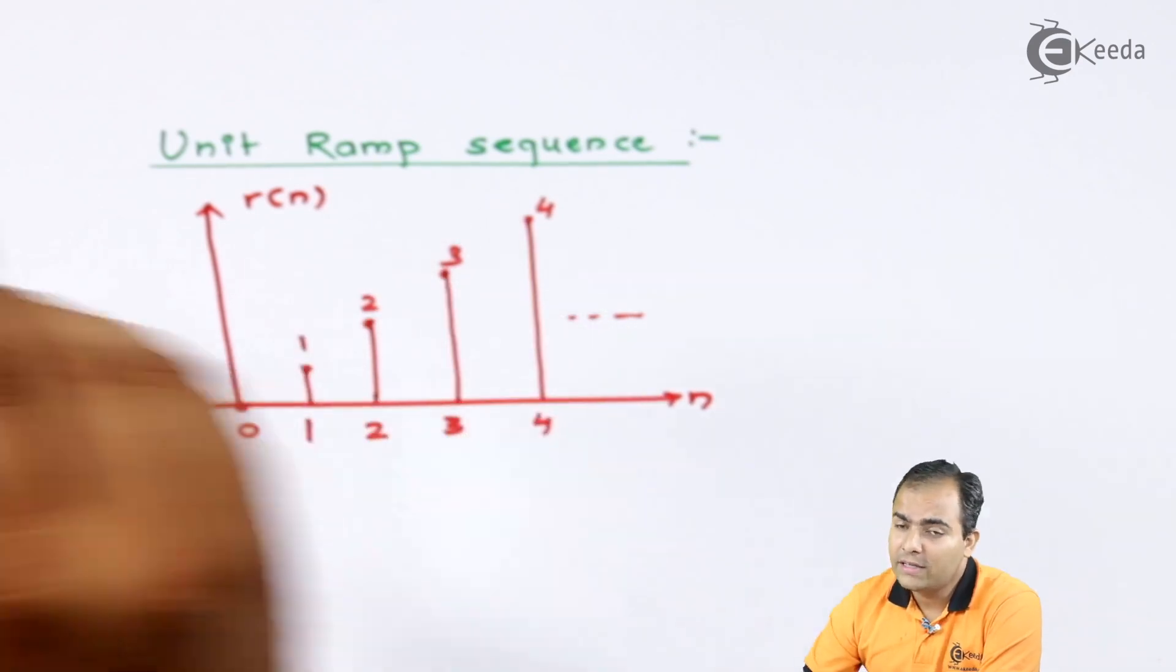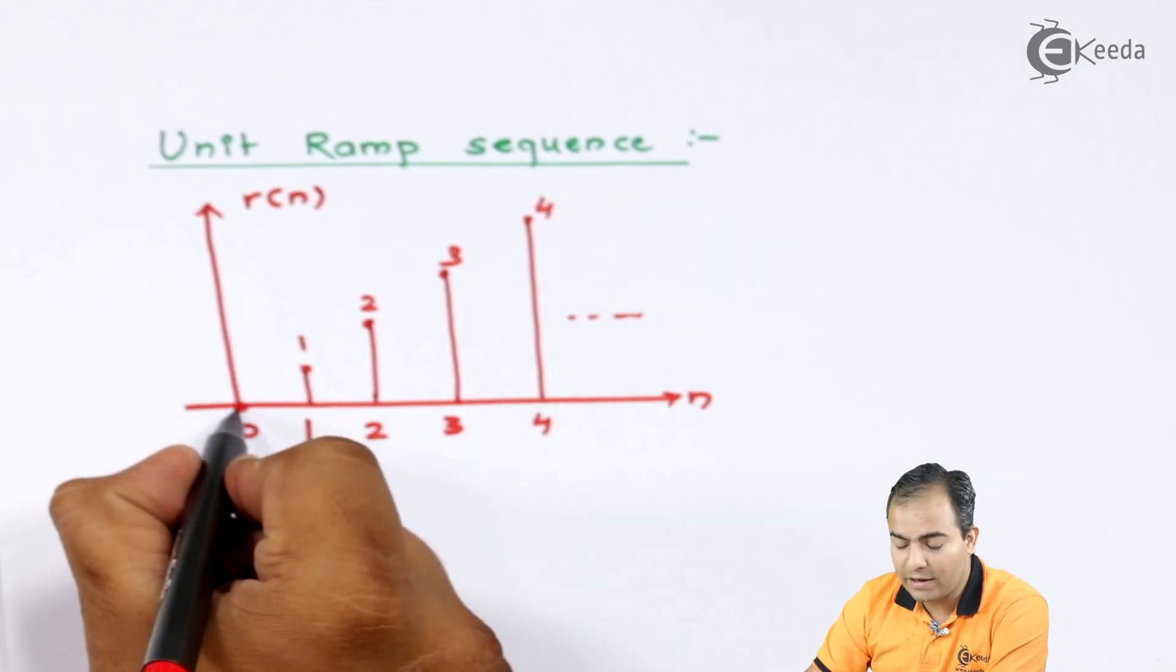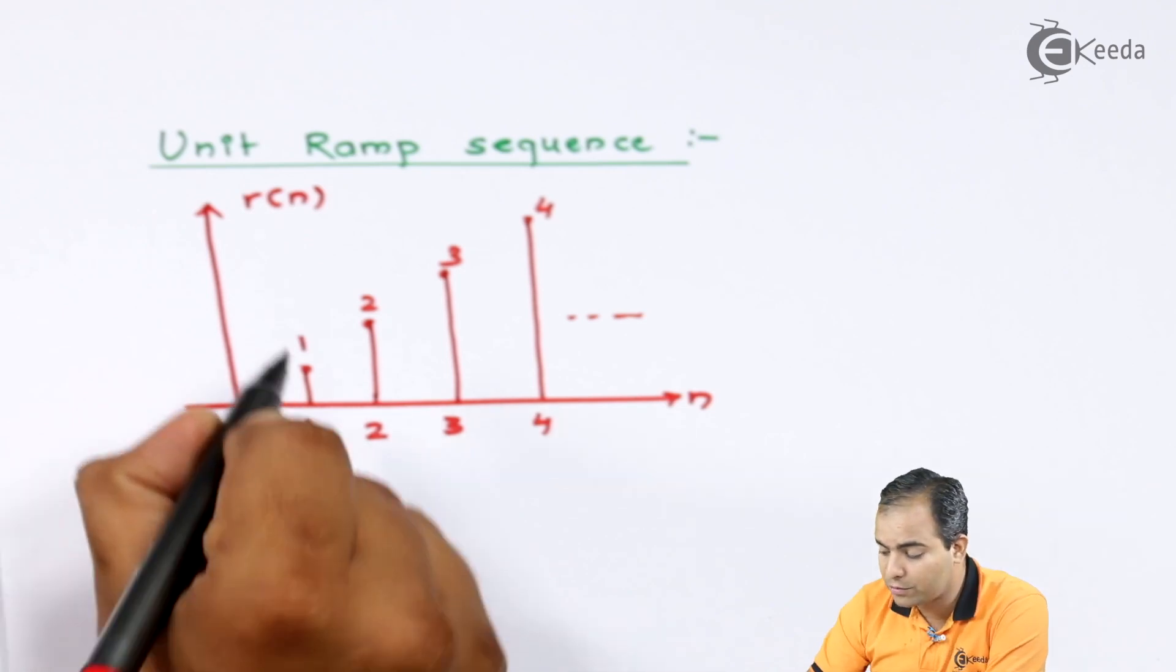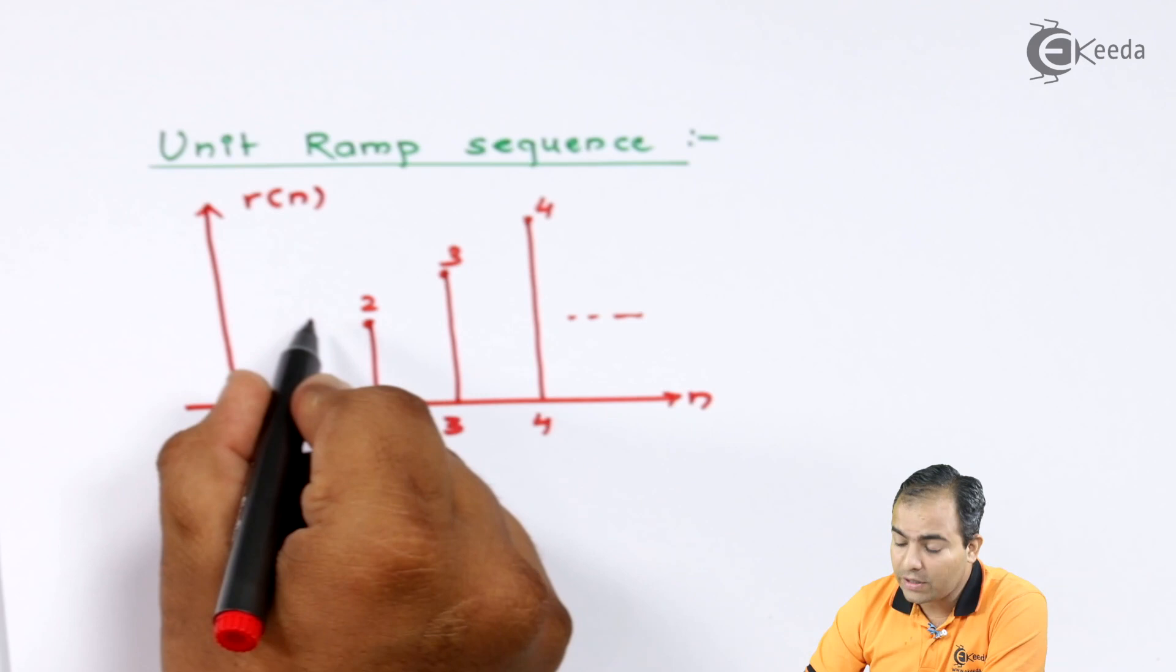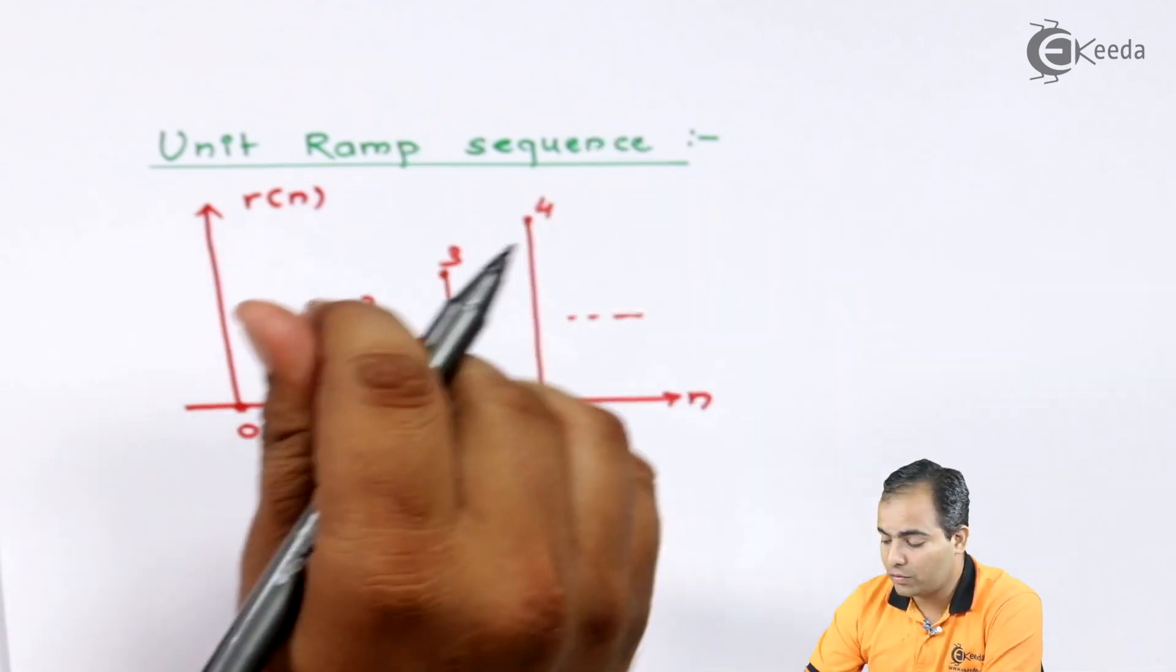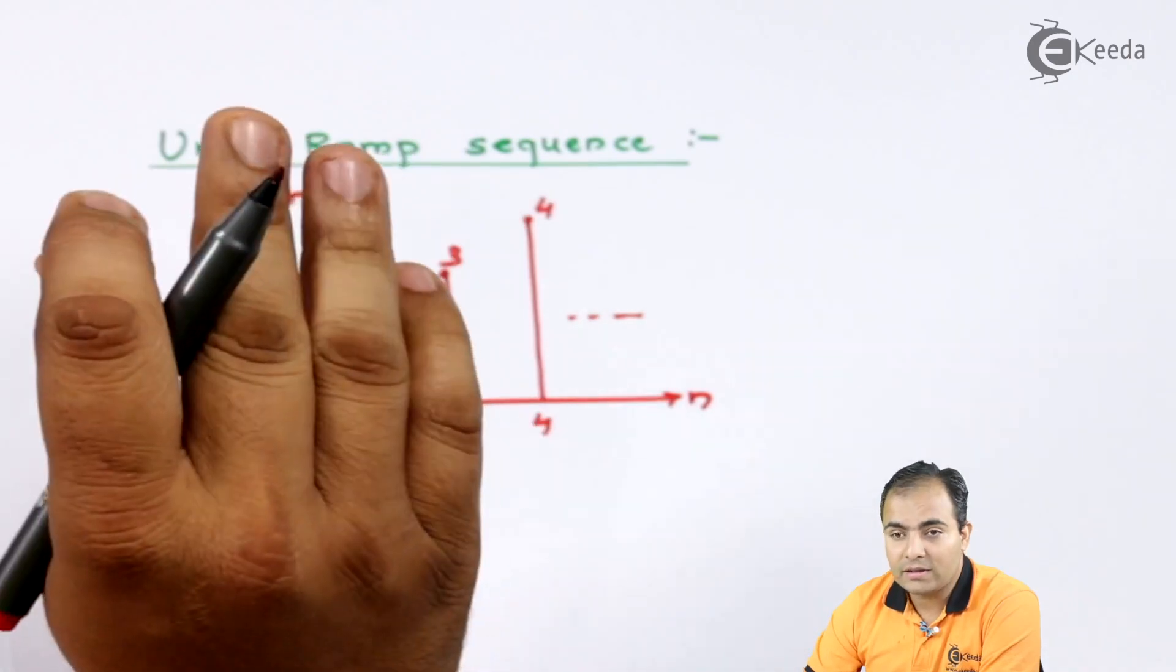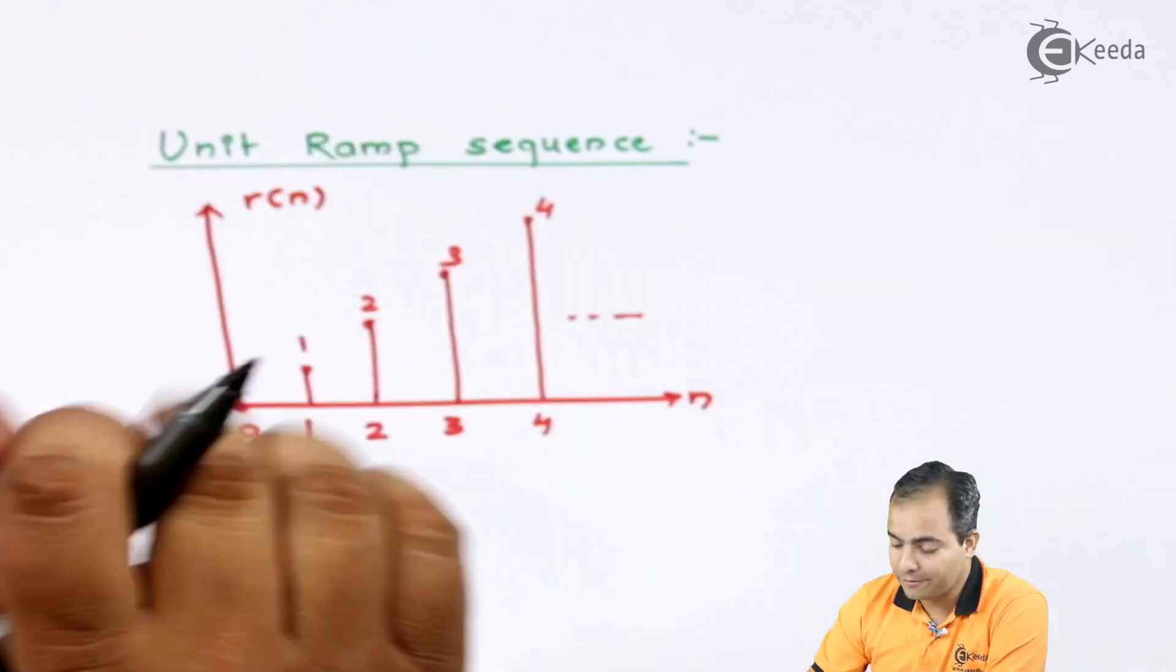1 to 2, 2 to 3, 3 to 4. Similarly, if the slope is 2, then this difference will be increased by 2. At n equals 0, amplitude is 0, but for n equals 1, amplitude will be 2. For n equals 2, amplitude will be 4, next one will be 6, next one will be 8, and so on. So this slope is important while plotting ramp wave.